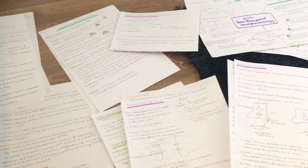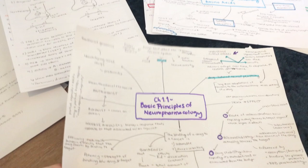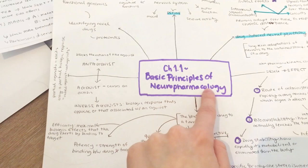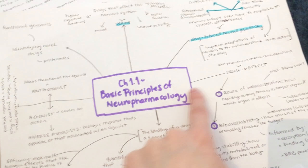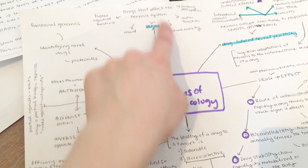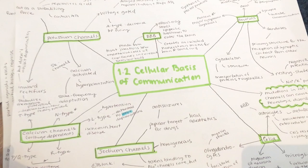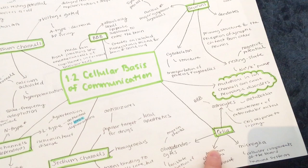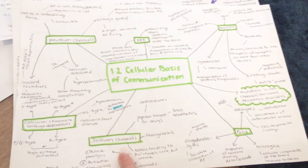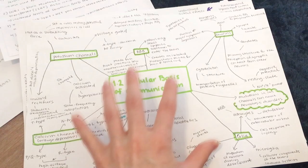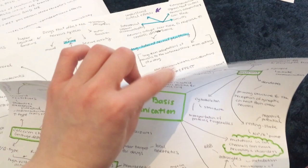I'm going to show you my mind maps that I make for studying. Yes, that is a lot of paper, but this is essentially how I do it for section one. Here's chapter one — Basic Principles of Neuropharmacology — that's the chapter name in the center, and from there I draw lines to the most important definitions and key points. Here's another one, Cellular Basis for Communication, where I've highlighted the main points and built off of those. The whole chapter gets condensed to one A4 piece of paper, and I had them blue-tacked on my wall for a while.